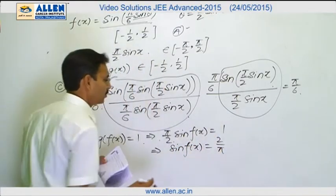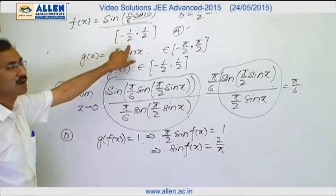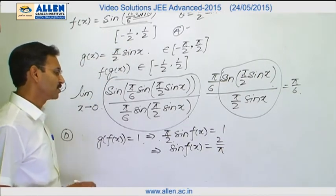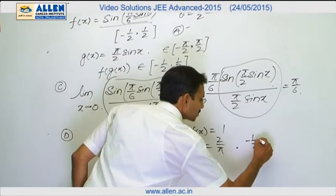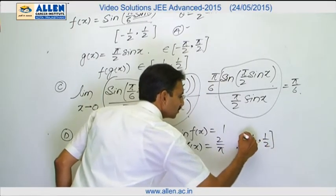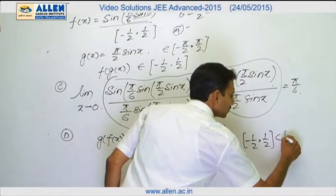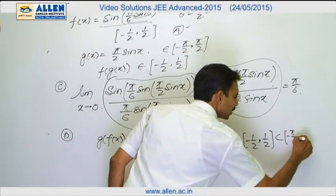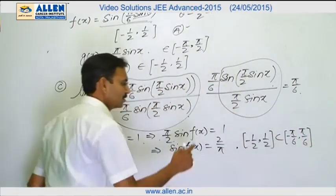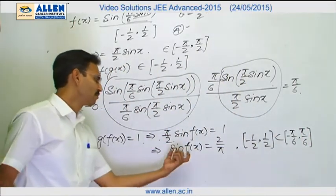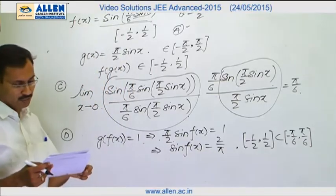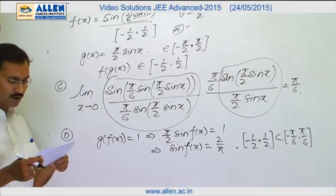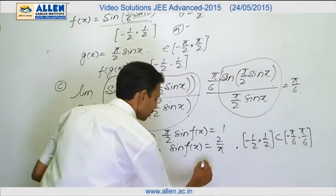But we know that f(x) belongs to minus half to half and minus half to half is subset of minus pi by 6 to pi by 6. This is subset of this set minus pi by 6 to pi by 6. And in this interval, sine will remain from minus half to half. So it cannot be equals to 2 by pi. So there is no solution. So d is the wrong option, a, b, c are only the correct options.